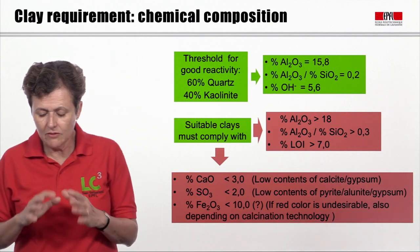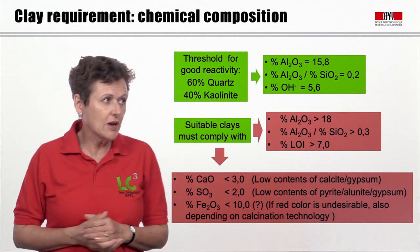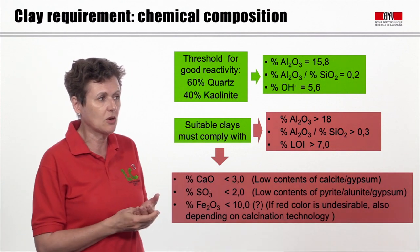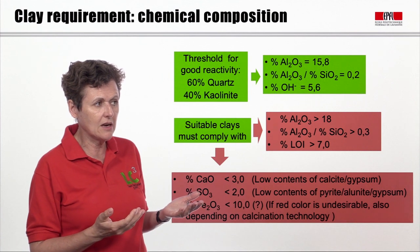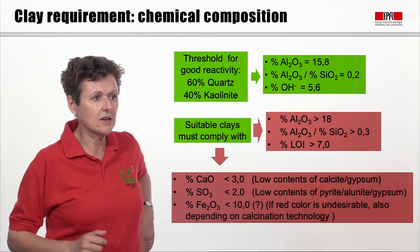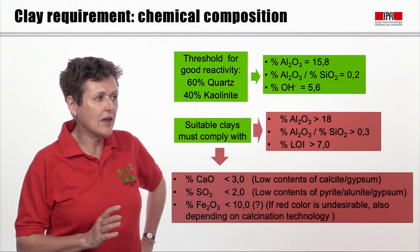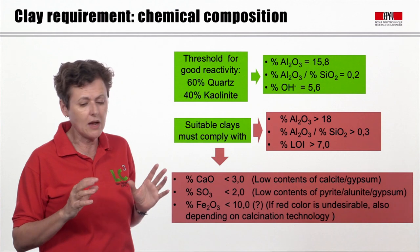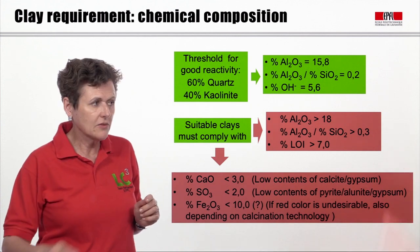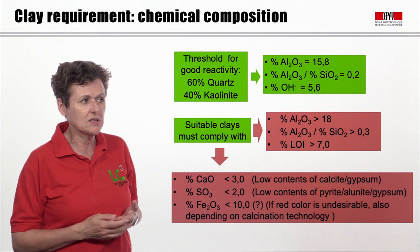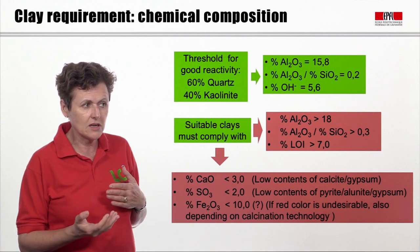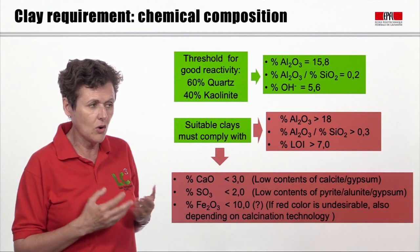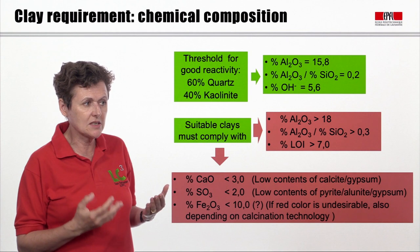To sum up, the threshold for good reactivity would be a mixture of, say, 60% quartz and 40% kaolinite. And if we want to be a little more conservative to ensure good quality, we would recommend: above 18% alumina content, an alumina-to-silica ratio of 0.3, and a loss on ignition between 400 and 650°C of 7%.